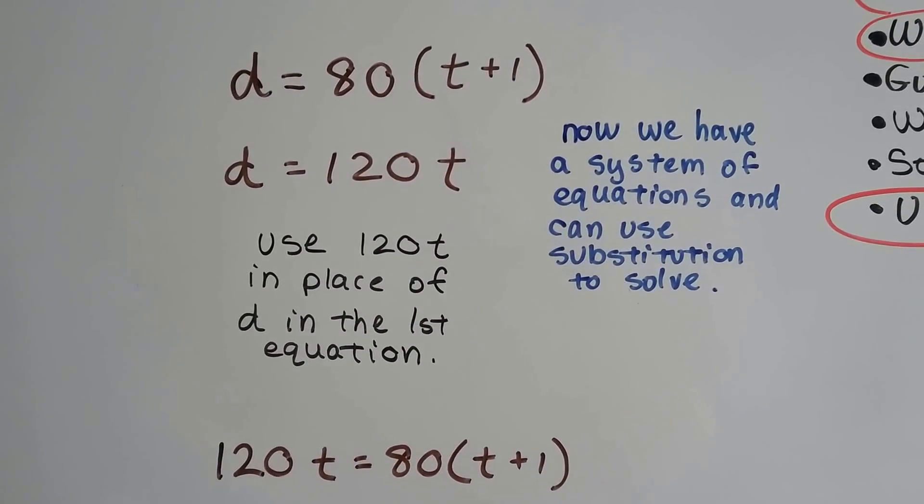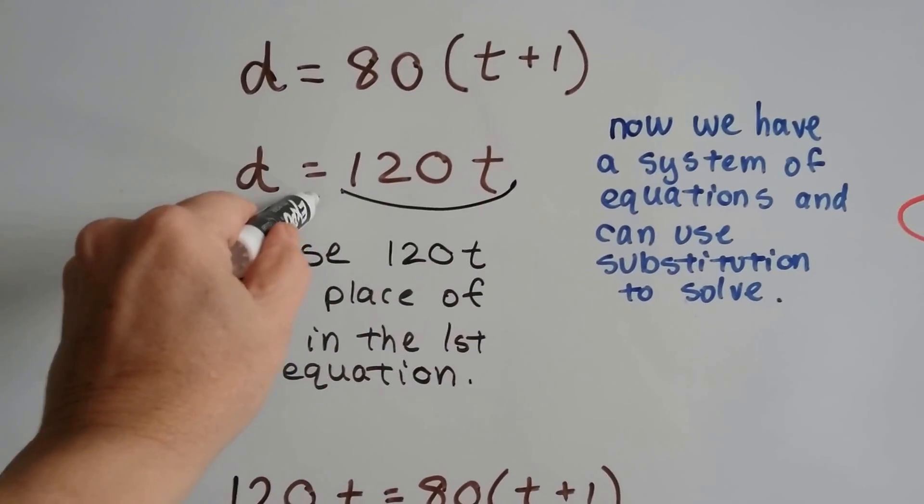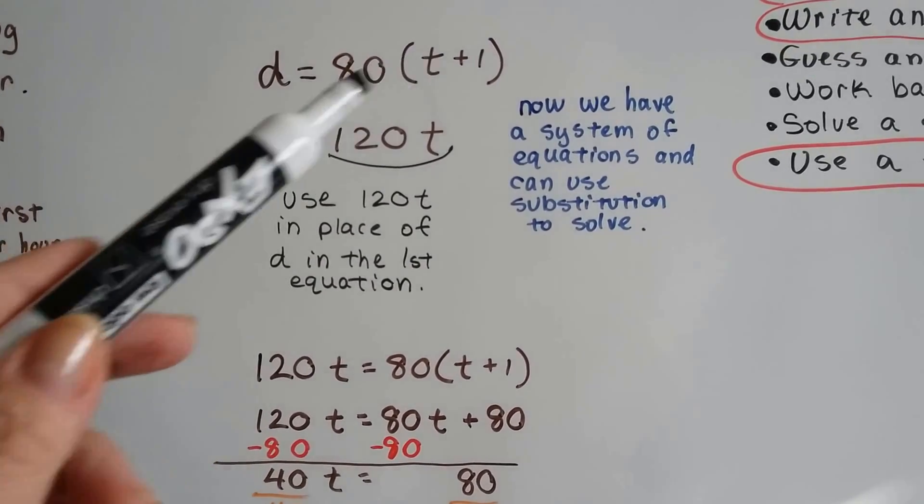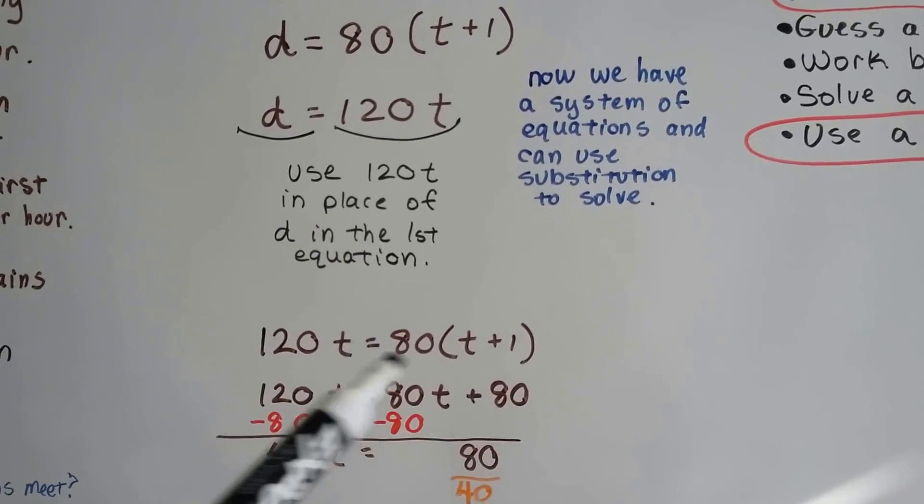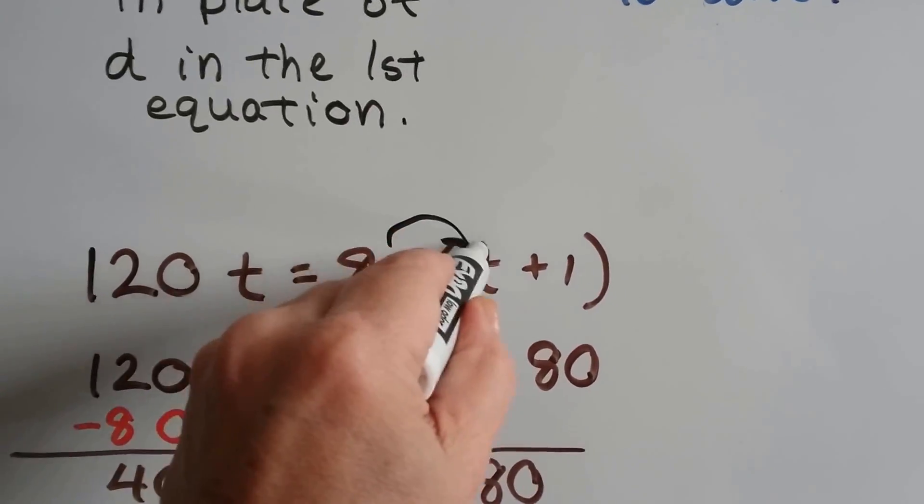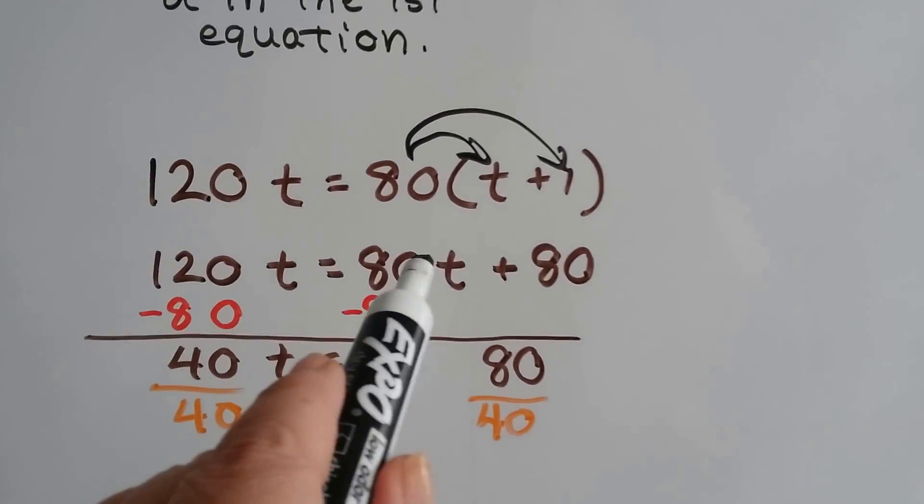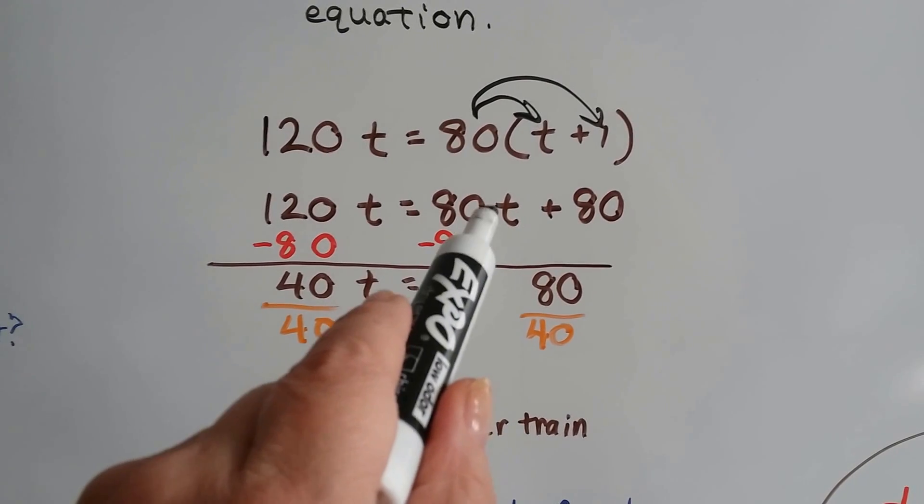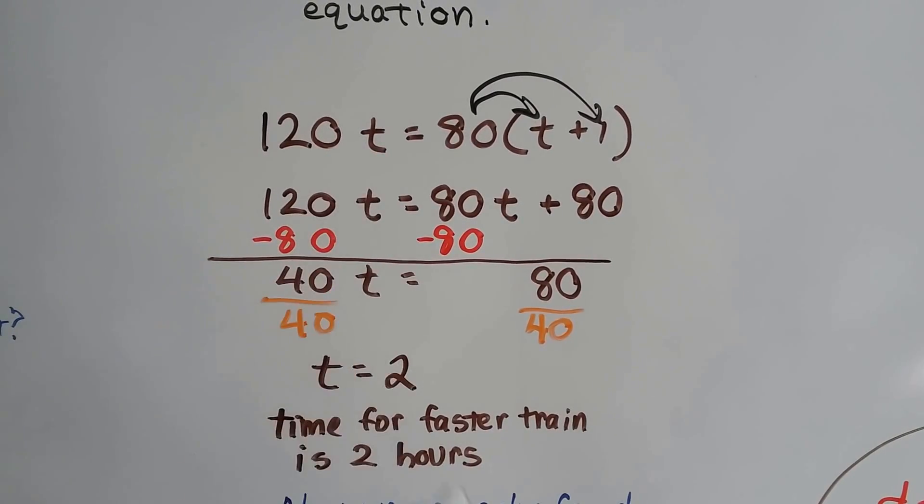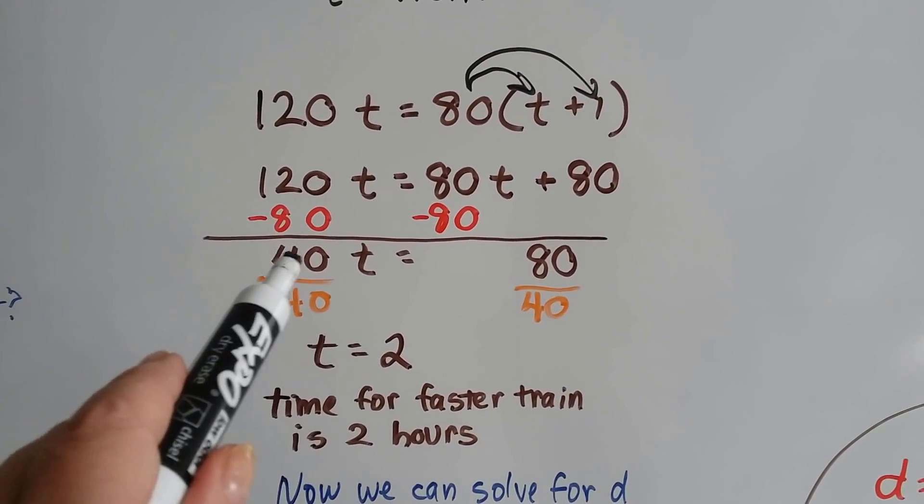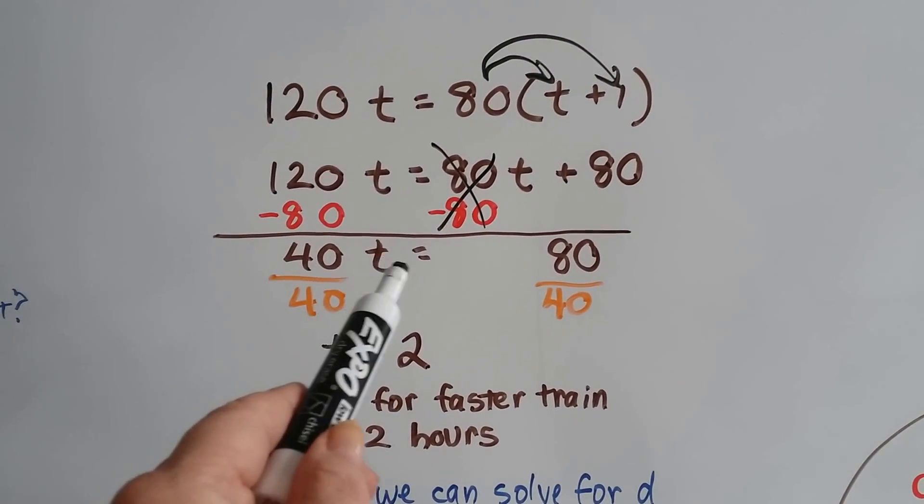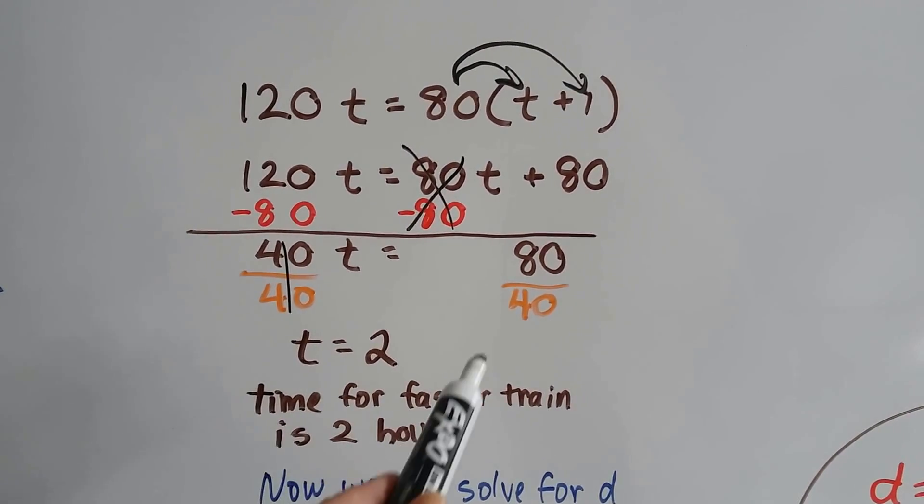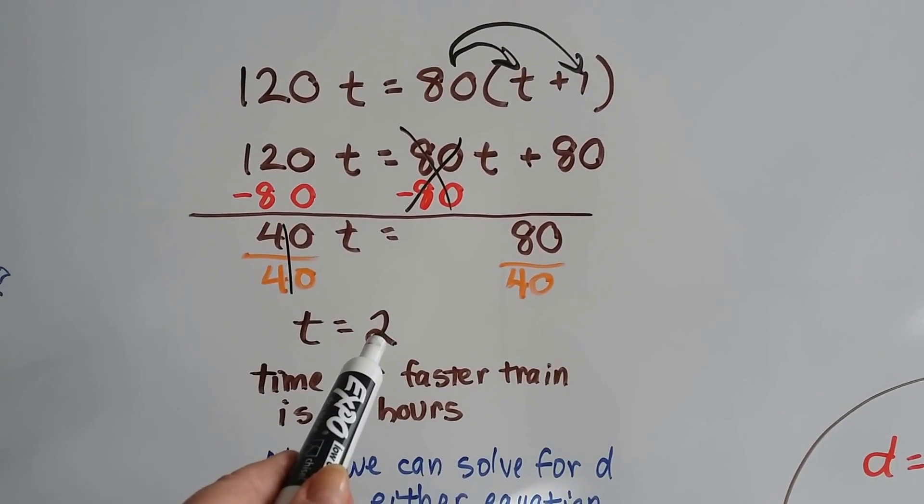Now we have a system of equations and can use the substitution method. We use 120t in place of d in the first equation, so 120t equals 80 times (t plus one). Using the distributive property, 80 times t and 80 times one gives us 80t plus 80. We have 120t equals 80t plus 80. Subtract 80t from both sides: 40t equals 80. Divide both sides by 40, and we get t equals 2. The time for the faster train is 2 hours.